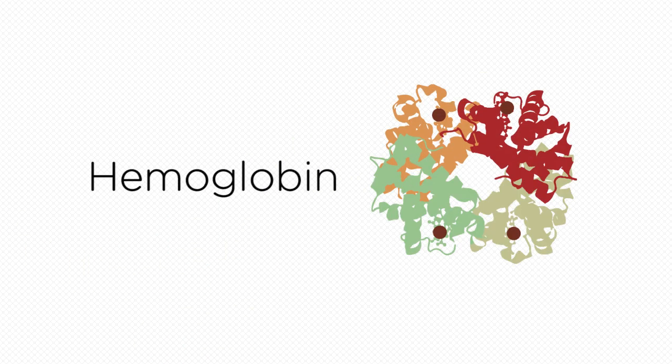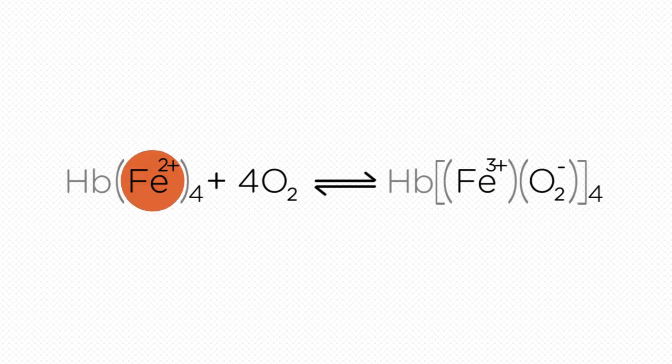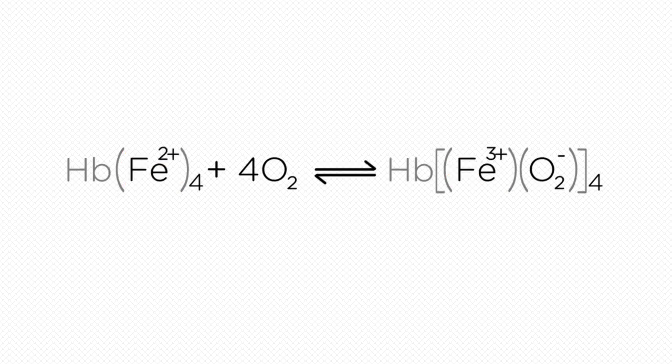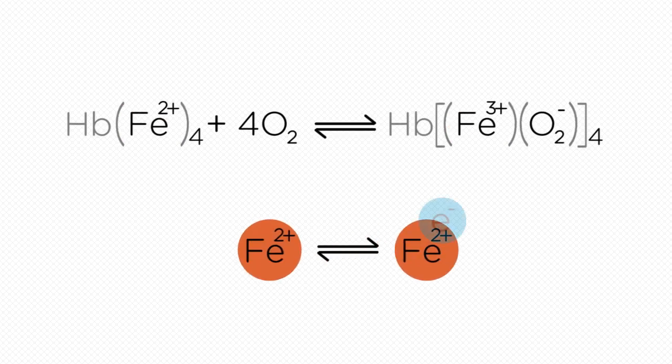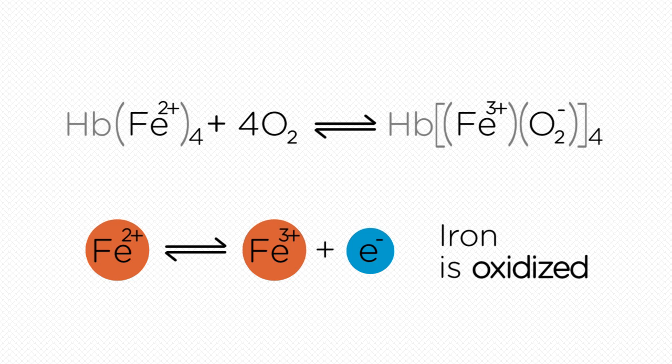Let's revisit the hemoglobin example we used in the last video. When the iron 2 plus in hemoglobin takes up oxygen, it is reversibly oxidized to iron 3 plus. The half equation for iron is very simple. Iron 2 plus is in equilibrium with iron 3 plus and one electron. Iron is oxidized in the forwards reaction.